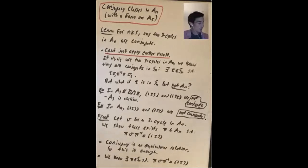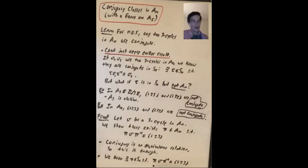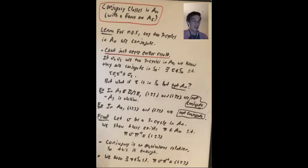We know that there's a permutation pi in SN such that pi·sigma·pi⁻¹ = (1,2,3), and now there are two cases. If pi is already in AN, then we're done — there's nothing to do. The more interesting case is when pi is in SN but not in AN, i.e., when pi is an odd permutation. When pi is an odd permutation, how do you make it into an even permutation? One way is to multiply it by your favorite transposition.